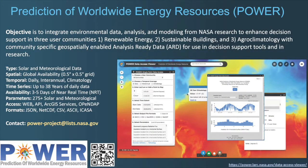NASA's Prediction of Worldwide Energy Resources, or POWER, was initiated to improve upon the current renewable energy dataset and to create new datasets from new satellite systems. POWER provides geospatially-enabled, analysis-ready data ranging from 1981 to the current date, consisting of over 275 meteorological and solar energy parameters at four temporal levels. The Data Access Viewer supports the download of data products from POWER's ArcGIS image services and API through a simplified user interface.